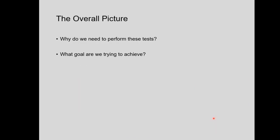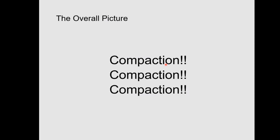So those are the tests. From there, we're going to go over how to run them. But first, we want to look at the overall picture — why we're running these tests and how the moisture tests, in-place density tests, and the proctor test all fit together. The primary thing we're trying to achieve is compaction. There are a lot of benefits to compaction.